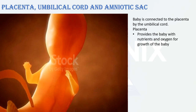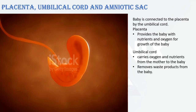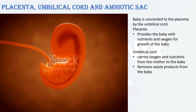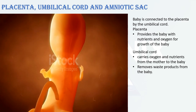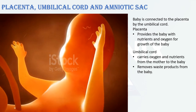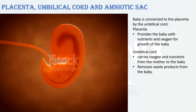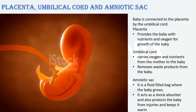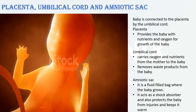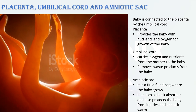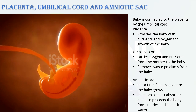The placenta helps in providing the baby with nutrients and oxygen for growth. The umbilical cord is like a tube that connects the baby to the mother's placenta — it carries oxygen and nutrients from the mother to the baby, and also helps in removing waste products from the baby to the mother's placenta. The amniotic sac is a fluid-filled bag where the baby grows, acting like a shock absorber, protecting the baby from injuries and keeping it warm.